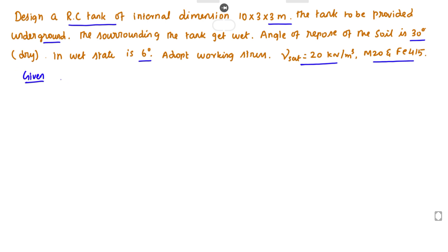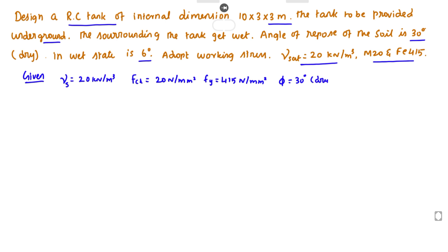The given values: gamma saturation equals 20 kN per meter cube. FCK equals 20 N per mm square. FY equals 415 N per mm square. Phi is 30 degrees for dry soil, and for wet condition phi equals 6 degrees. L equals 10 meters, depth equals 3 meters, width equals 3 meters.